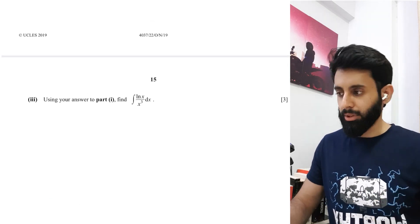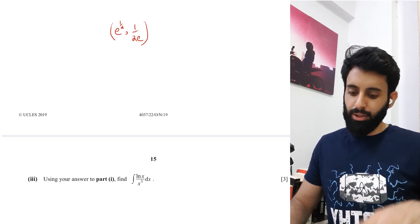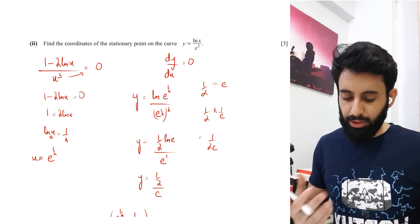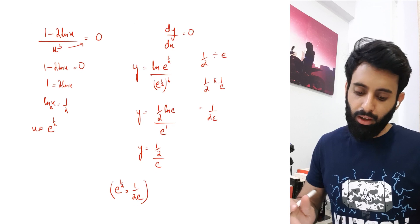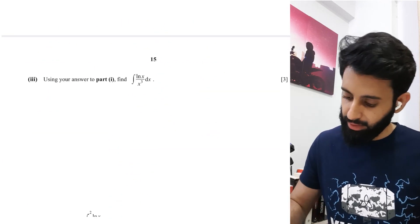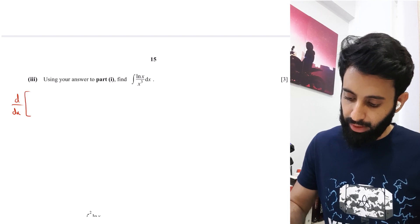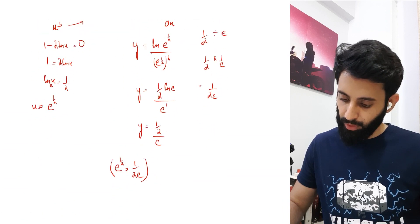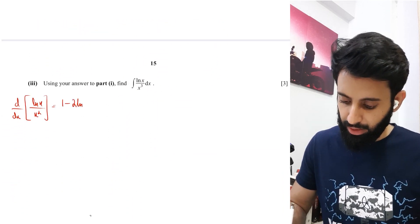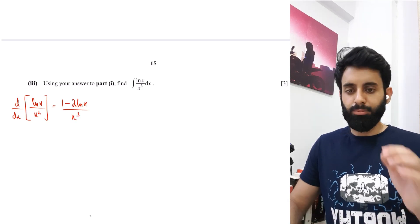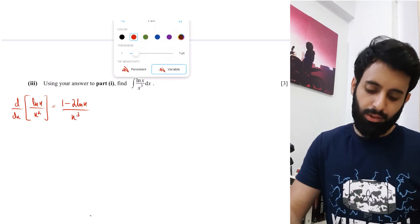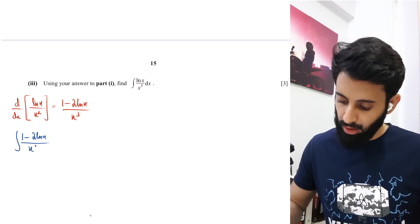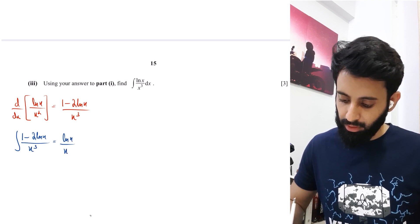Part 3: using part 1, find the integral of ln(x) / x^3. We just found that the differential of ln(x)/x^2 equals (1 minus 2lnx) / x^3. By reverse integration, the integral of (1 minus 2lnx) / x^3 equals ln(x) / x^2.